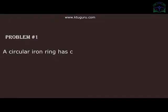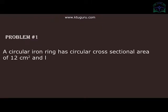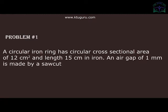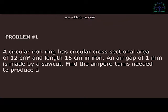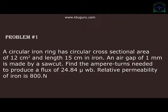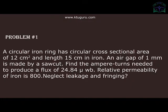A circular iron ring has a circular cross-sectional area of 12 cm² and a length of 15 cm in iron. An air gap of 1 mm is made by a socket. Find the ampere-turns needed to produce a flux of 24.84 µWb. The relative permeability of iron is 800. Neglect leakage and fringing.